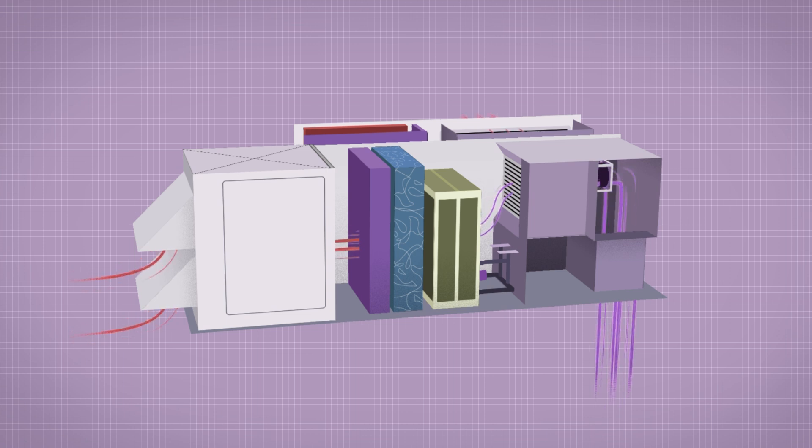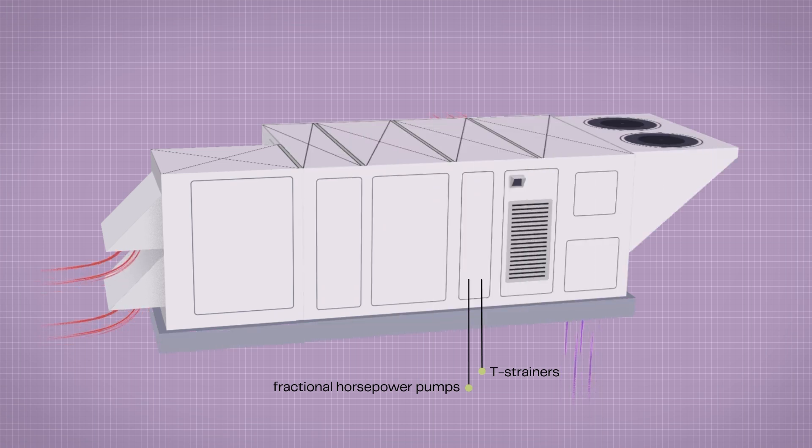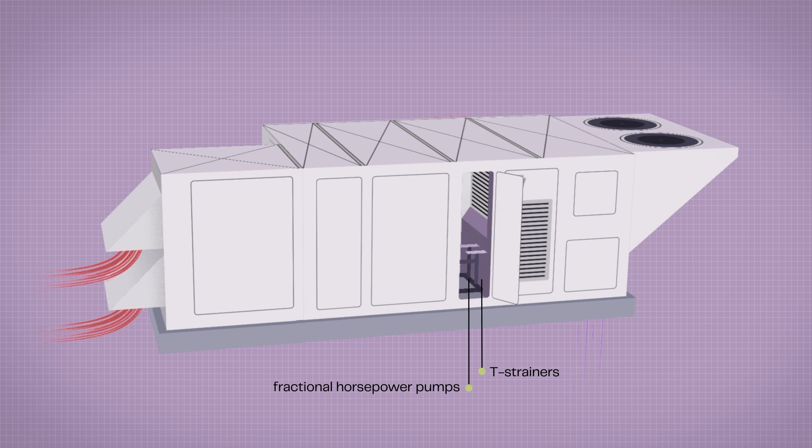Maintenance of the Arc2Dry is virtually identical to a standard DOAS. The desiccant system itself only uses two fractional horsepower pumps. Two easy-to-access reusable tea strainers require rinsing at the same interval as air filter changes, meaning maintaining Arc2Dry is a snap.